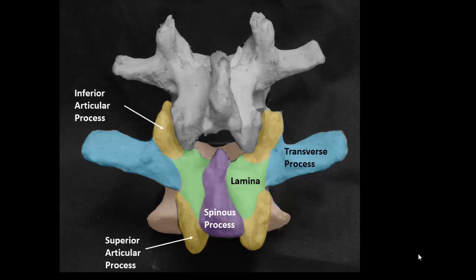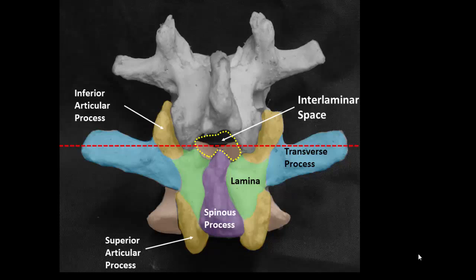Note that in the posterior-anterior view, the interlaminar space lies in approximately the same transverse plane as the articular processes and the transverse processes, and these can be important surrogate markers of its position. Note too that in the older patient, degenerative hypertrophy of the articular processes and facet joints can significantly narrow the interlaminar space, which contributes to technical difficulty in imaging and accessing the vertebral canal.